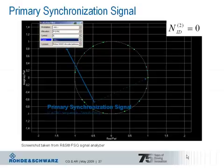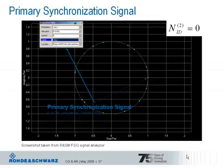When we look at the constellation diagram of the primary synchronization signal, recorded here with the Rohde and Schwarz leading signal analyzer FSQ, we get this result. Can we extract the characteristic of the primary synchronization signal? Yes, we can. The constant amplitude is indicated by the unique circle.